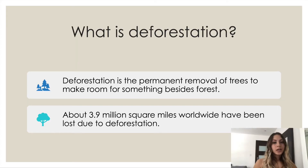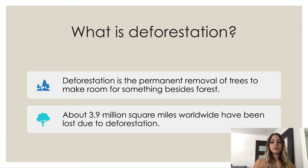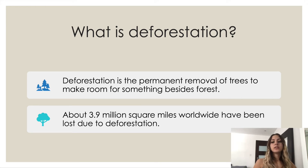Now let's talk about deforestation. What is deforestation? Deforestation is the permanent removal of trees to make room for something besides forest. This can include clearing the land for agriculture or grazing, or using the timber for fuel, construction, or manufacturing.